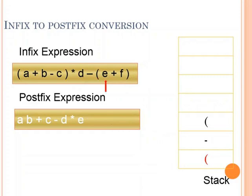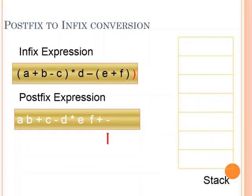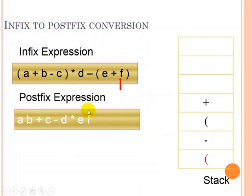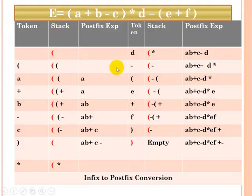Then E is an operand, coming to the postfix expression. And plus, it will go into the stack session. And F is the operand, so come into the postfix expression and finally when we encounter the closing bracket then it will remove all the elements from the stack. Finally we can arrange this total evaluation process.